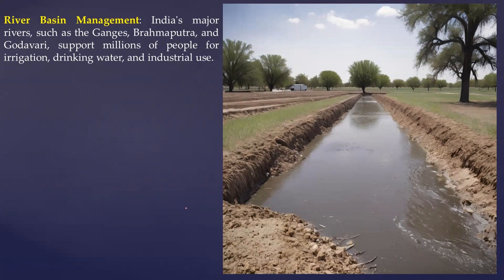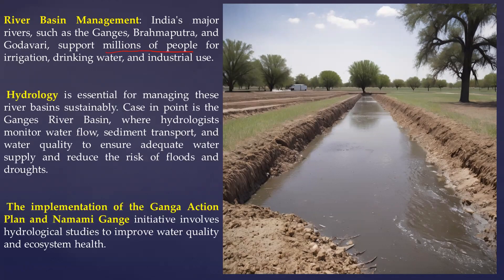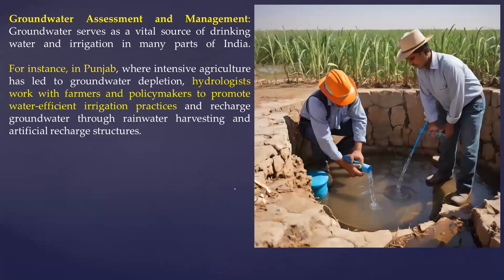The second scope is river basin management. Major basins like the Ganga, Brahmaputra, Godavari, and others — where millions of people use river water for irrigation, drinking water, and industrial use — require hydrology's role. In the Ganga river basin, hydrologists monitor water flow, sediment transport, and work to reduce flood risk. Programmes like the Ganga Action Plan and Namami Ganga are relevant examples currently in news.